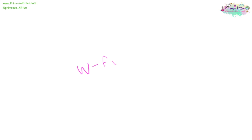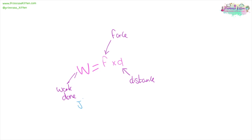To calculate work done, that is force times distance. Work done is measured in joules, force is measured in newtons, and distance is measured in metres. From this we can say that one joule is equal to one newton metre.